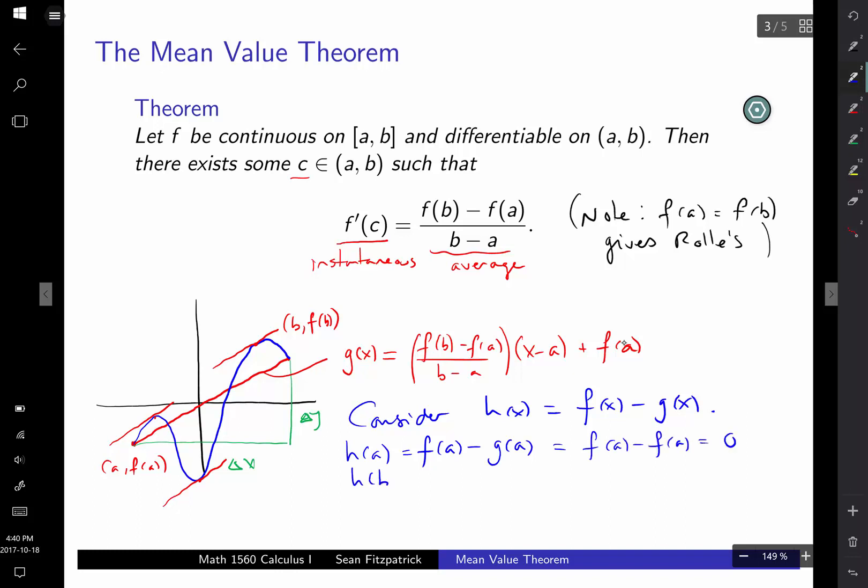And h(B), you get f(B) minus g(B). But what happens if I put a B in for my x here? Well, I get a B minus A cancels with this B minus A. And then I've got f(B) minus f(A) plus f(A). Well, the f(A)s cancel. And I get f(B). So I get f(B) minus f(B). I get zero.